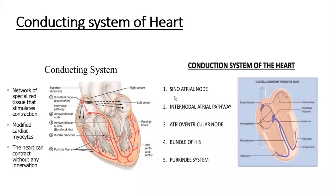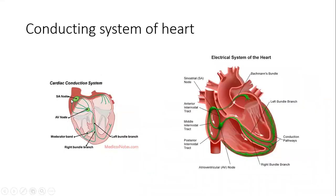The SA node is actually the pacemaker of the heart. It is located anterolaterally, just deep to the epicardium, at the junction where the superior vena cava enters into the right atrium, just narrow to the upper part of the sulcus terminalis. The contracting stimulus begins from the SA node, which is why it is known as the pacemaker of the heart.